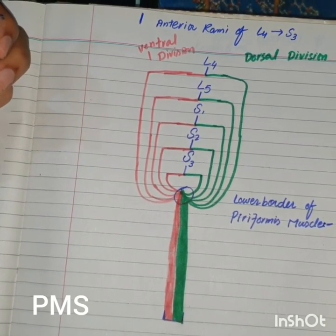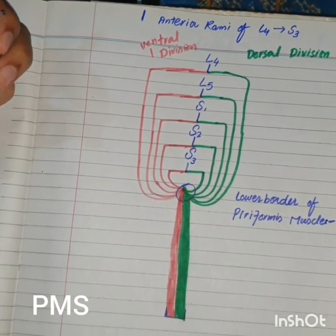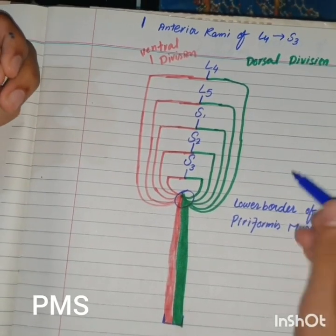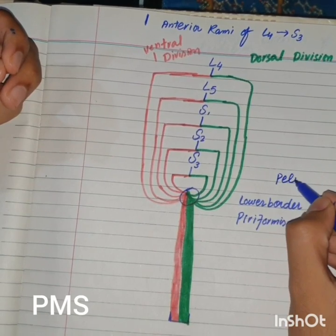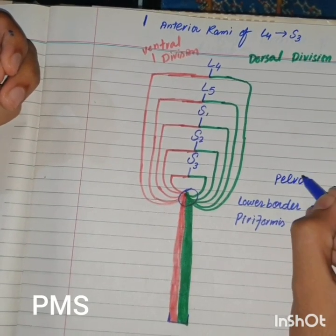The sciatic nerve is formed at the pelvis region.